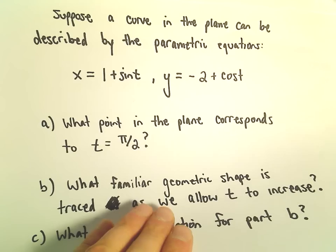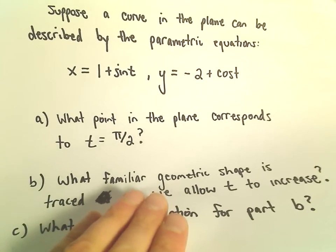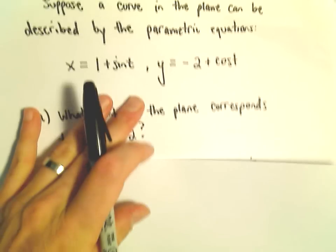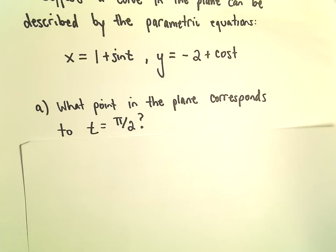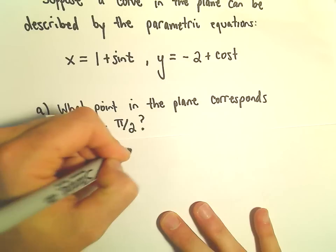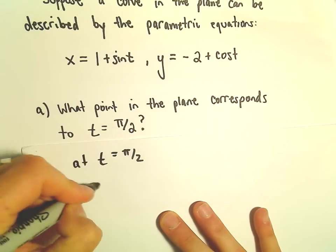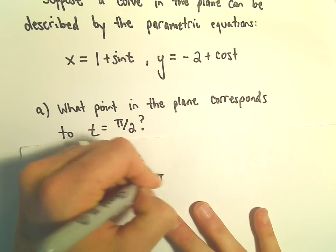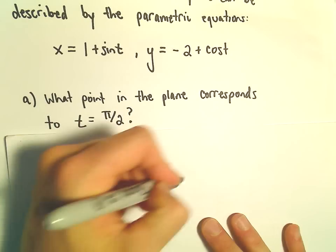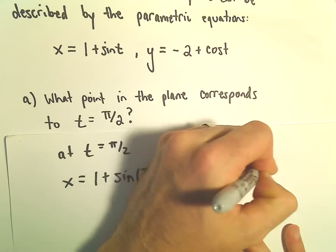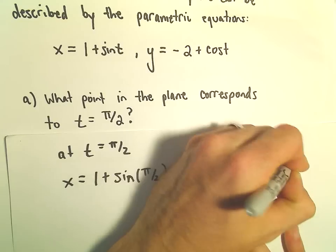We want to know what point in the plane corresponds to t equals pi over 2. Well, not much to do in this case except plug in pi over 2. So at t equals pi over 2, we'll have x equals 1 plus sine of pi over 2, and we'll have y equals negative 2 plus cosine of pi over 2.